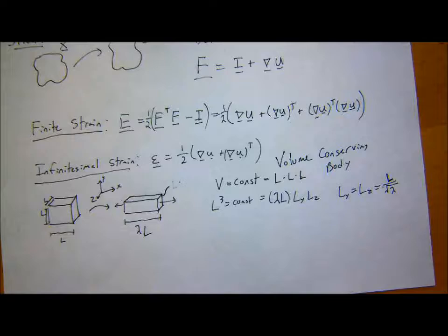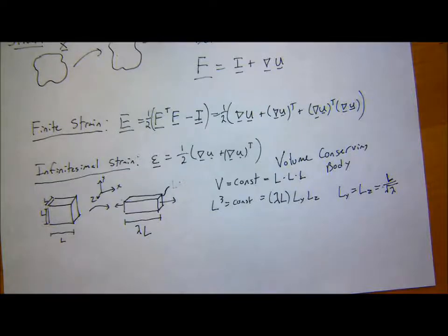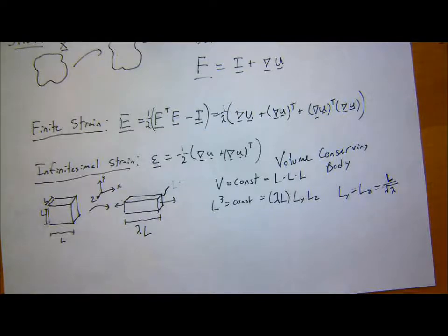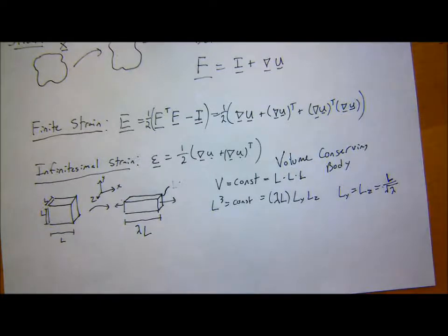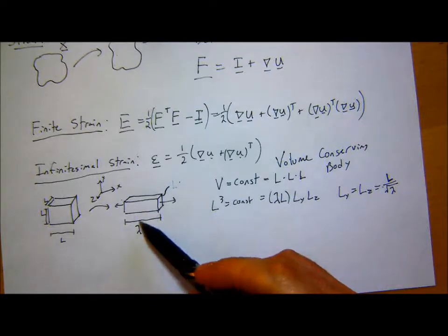For a body with a Poisson's ratio of 0.5, that's actually a volume-conserving body. So most metals and plastics are around 0.2 to 0.3 Poisson's ratio. If you have a Poisson's ratio of 0.5, if you stretch it the volume stays the same. A few materials satisfy that — one of the most common are rubbers and elastomers, with Poisson's ratio close to 0.5 (about 0.49). Cork also has a Poisson's ratio right around 0.5. So if I took rubber and stretched it out, the volume would actually stay the same.